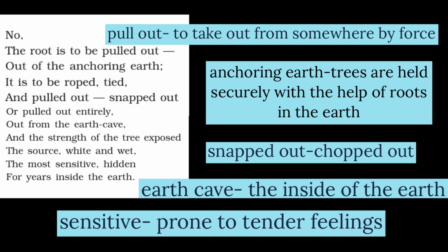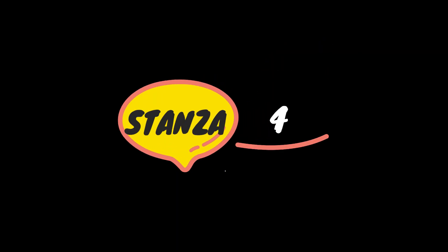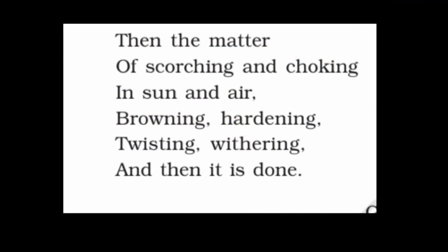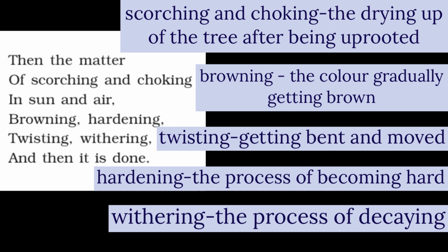Stanza four: 'Then the matter of scorching and chalking in sun and air, browning, hardening, twisting, withering, and then it is done.' Glossary: 'scorching and chalking' means the drying up of the tree after being uprooted; 'browning' means the color gradually getting brown.